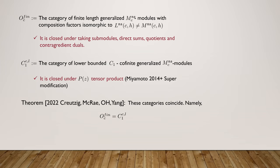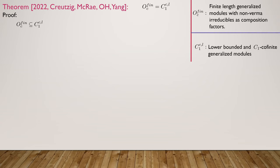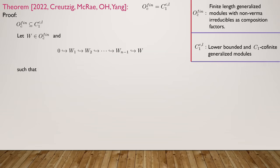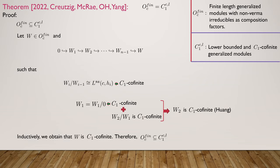Let me sketch the proof. One inclusion is easy: O_{C-finite} consists of finite length generalized modules, and C1 of lower bounded C1 cofinite modules. If you grab a module of finite length with composition factors that are irreducible non-Verma, then it has a resolution where each subquotient is an irreducible non-Verma and therefore C1 cofinite. It's easy to show that C1 cofiniteness lifts: W is W modded by 0 so it's C1 cofinite, and W_2 mod W_1 is C1 cofinite, so we can lift it thanks to a result of Huang. Inductively, W is C1 cofinite.